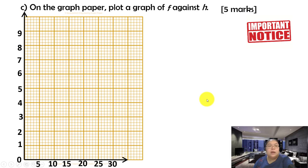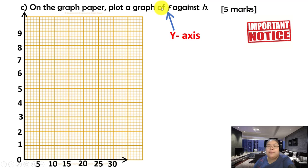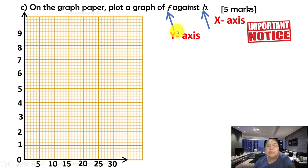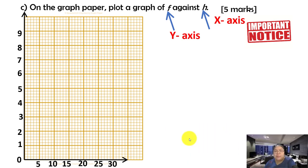To plot the graph, note the key instruction: the first physical quantity mentioned in the 'plot a graph' sentence goes on the y-axis, and the second goes on the x-axis. So f is the y-axis and h is the x-axis.